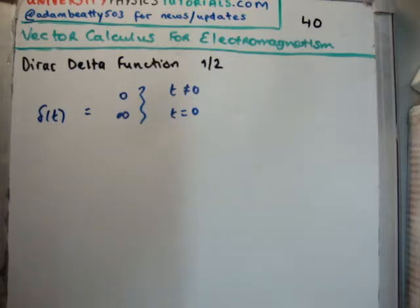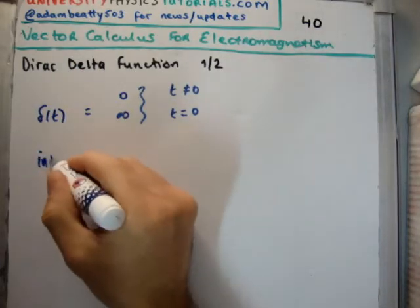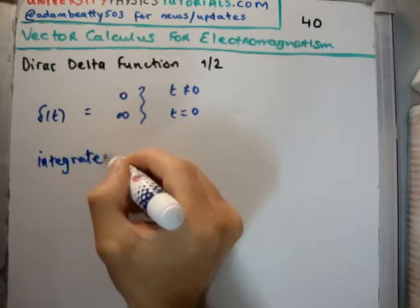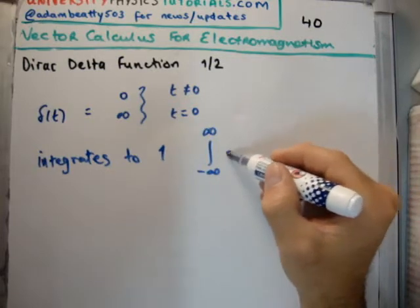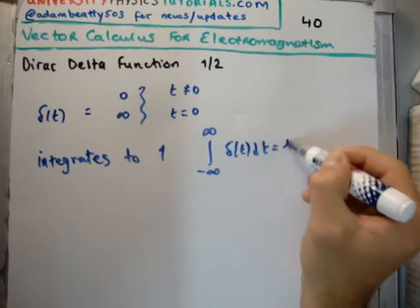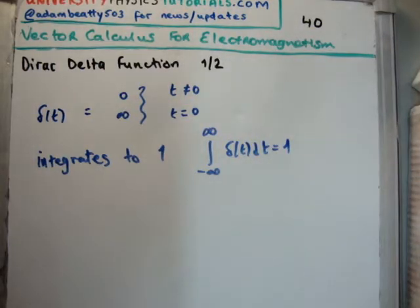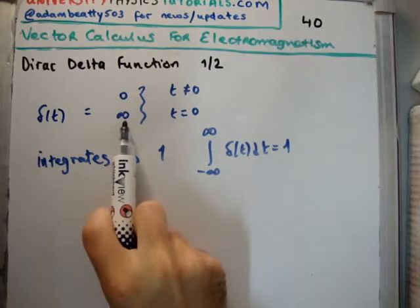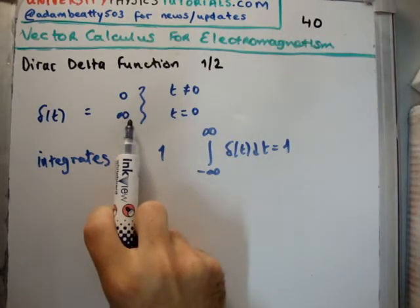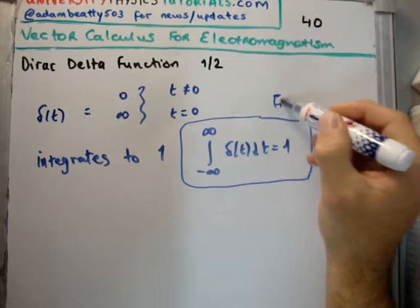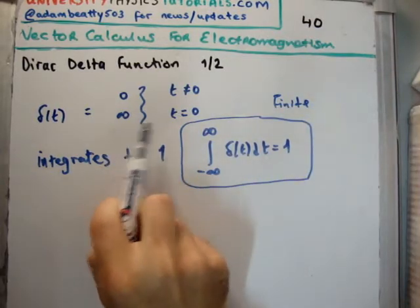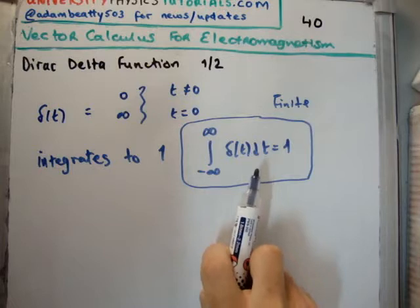And I'll give you a motivation for it perhaps in video number two. That is the definition of it. However — and this is very important — it integrates to unity, or it integrates to one. So if we integrate it across all space, the integral of delta of t dt, we're going to get one. So this is a strange function: it's zero everywhere except at the origin where it is infinity, yet it integrates to a finite number.